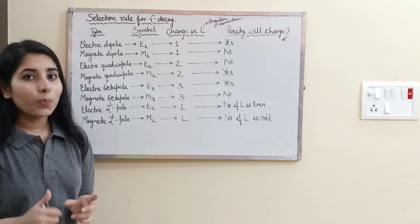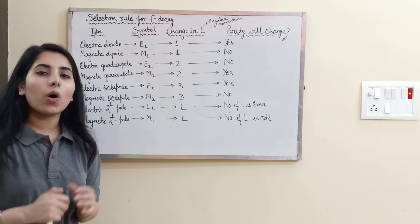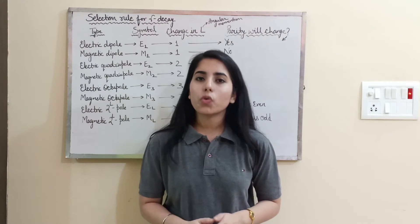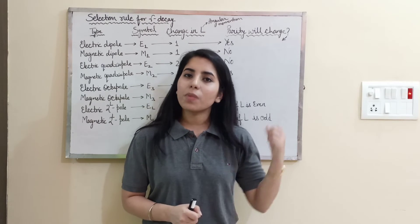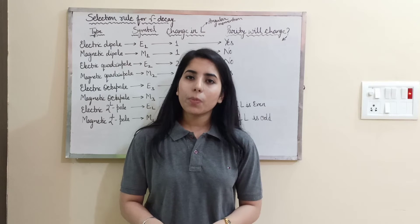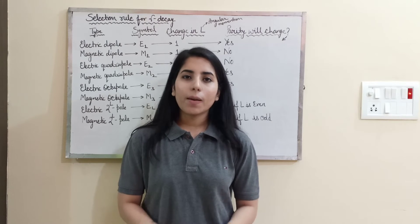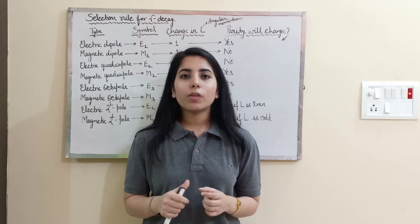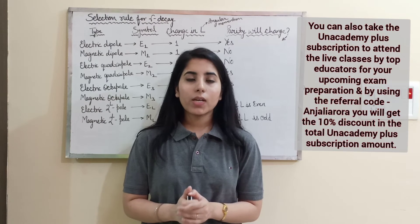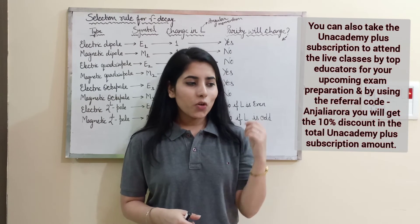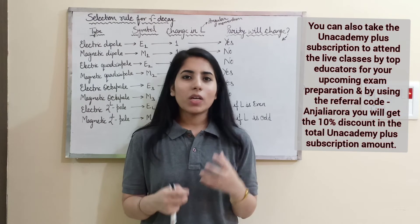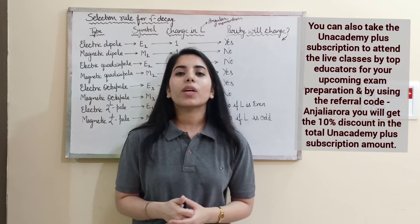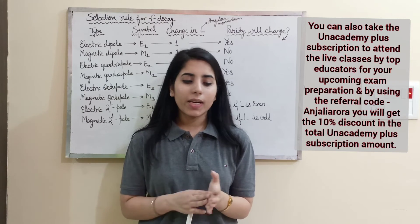That's how everything should be clear now. If there is any doubt, let me know. In upcoming videos we will also discuss questions based on these rules. You can prepare the selection rules for gamma decay by drawing this table once or twice, and after that you will have confidence and be able to easily relate all the rules.